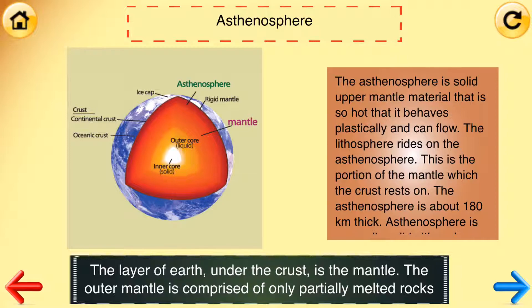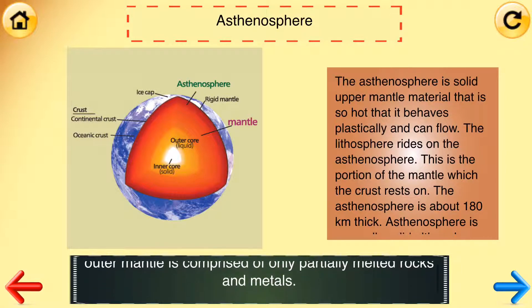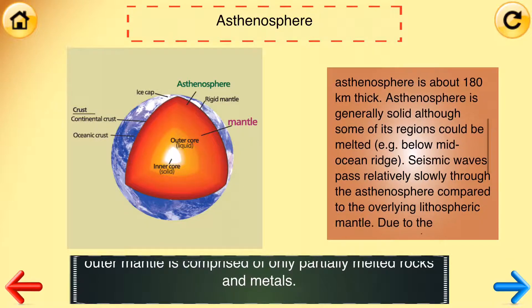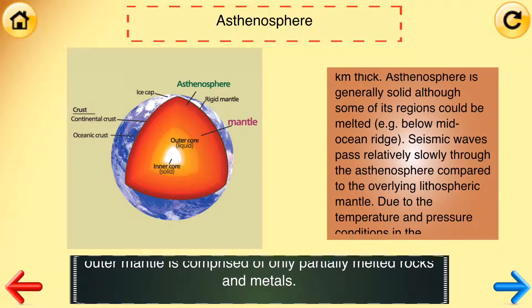Asthenosphere: the layer of earth under the crust is the mantle. The outer mantle is comprised of only partially melted rocks and metals. The asthenosphere is solid upper mantle material that is so hot that it behaves plastically and can flow. The lithosphere rides on the asthenosphere, which is the portion of the mantle the crust rests on. The asthenosphere is about 180 kilometers thick and is generally solid, although some regions could be melted.